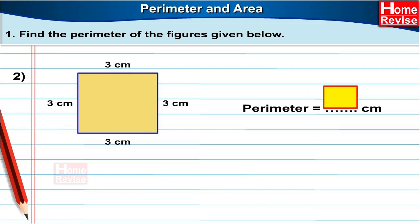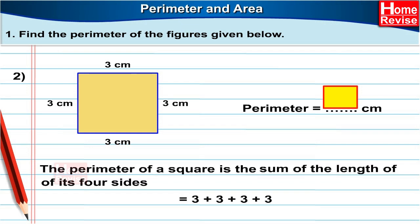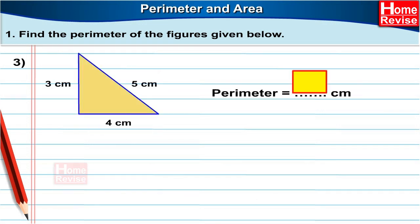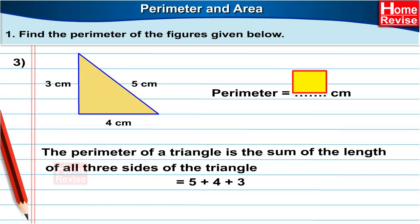Number two: It is a square and all of its sides are three centimetres long. The perimeter of a square is the sum of the length of its four sides. So it is three plus three plus three plus three, which is equal to twelve centimetres. Next is a triangle whose sides are five centimetres, four centimetres and three centimetres. The perimeter of a triangle is the sum of the length of all three sides, so it is five plus four plus three, which is equal to twelve centimetres.